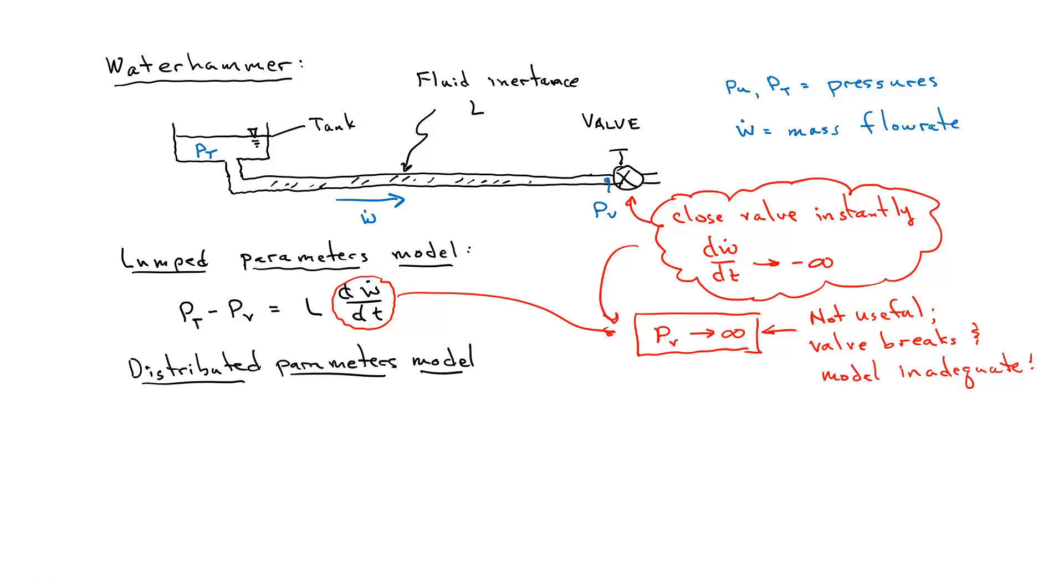Now with the distributed parameters model, if I close this valve suddenly, this fluid will suddenly stop. However, the information that the fluid down at the valve has stopped takes time to propagate up to the tank.